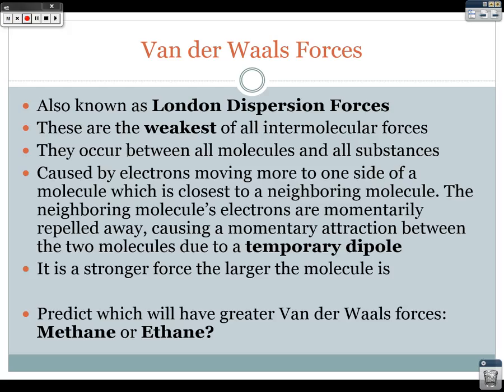Earlier we talked a little bit about naming hydrocarbons, and we have the hydrocarbons methane and ethane. Think about the size of those molecules and which one is going to have the greater van der Waals forces — methane or ethane. The answer, of course, being ethane, because it has two carbons instead of the one carbon in methane. So it is a larger compound and will have a stronger van der Waals force.